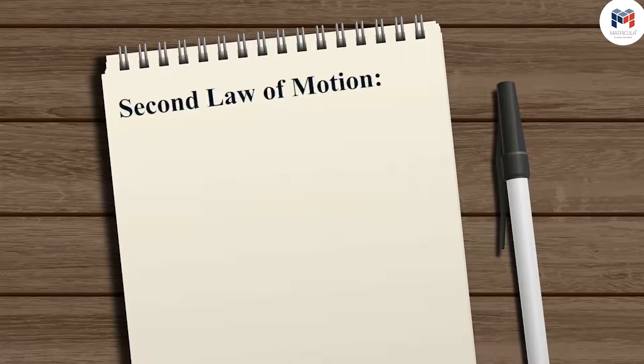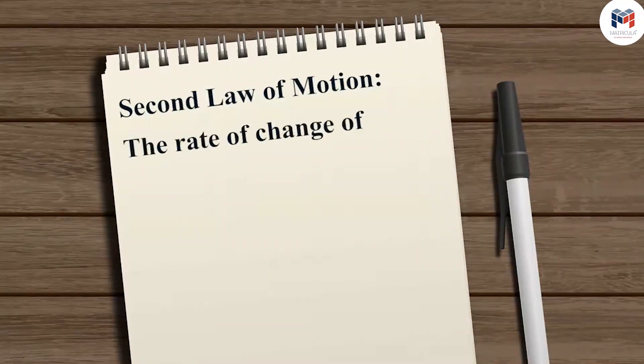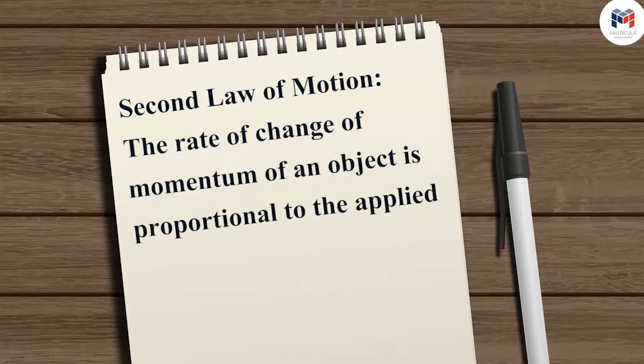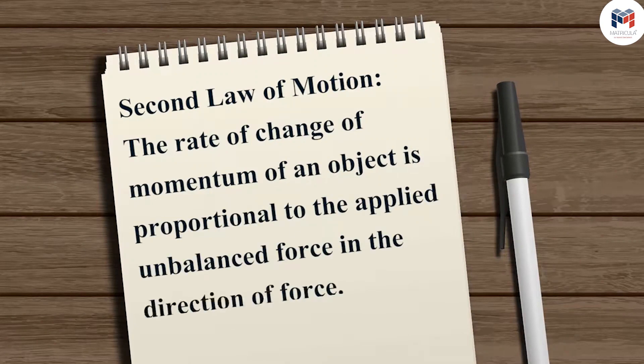That is, the force that needs to be applied to change the momentum of an object depends on the change of momentum with respect to time. Based on this concept, Newton proposed the second law of motion, which states that the rate of change of momentum of an object is proportional to the applied unbalanced force in the direction of force.